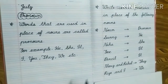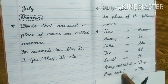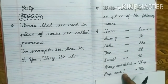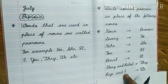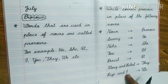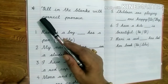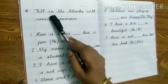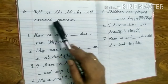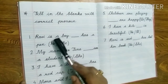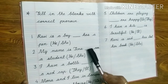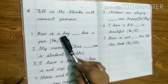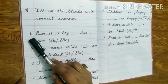So children, you have to write down this work in your English pair notebook. After that we will write some sentences about pronoun. Let's go to the next page and write the question here: Fill in the blanks with the correct pronoun. We have to fill the correct pronoun in these blanks after reading the sentence. Let's start with the first one.